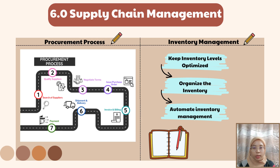For inventory management steps. First, keep inventory levels optimized: avoid excessive stock by using sales trends and demand forecasting to order the right quantity, reducing costs and preventing outdated unsellable items. Second, organize the inventory: systematically arrange products and use labels or barcodes for easier tracking, and consider using inventory management software to maintain accurate records and monitor stock levels. Third, automate inventory management: use automation for real-time tracking, accurate stock counts, and efficient order processing to reduce errors, improve efficiency, and provide valuable insights for decision making.